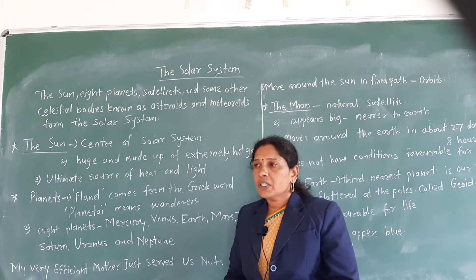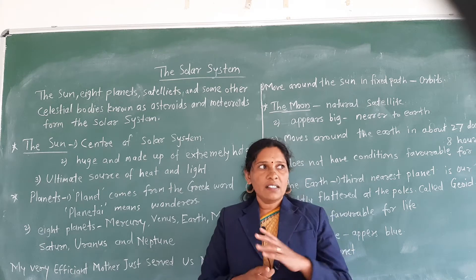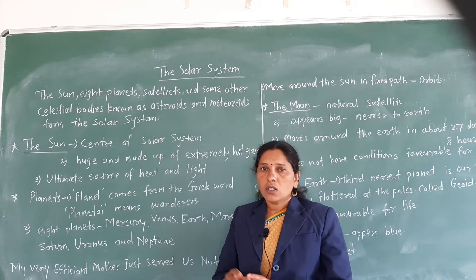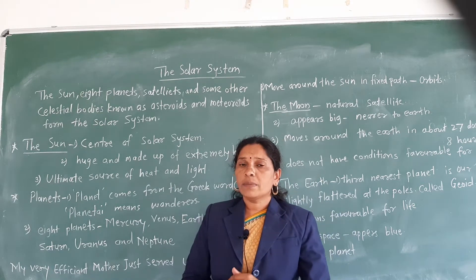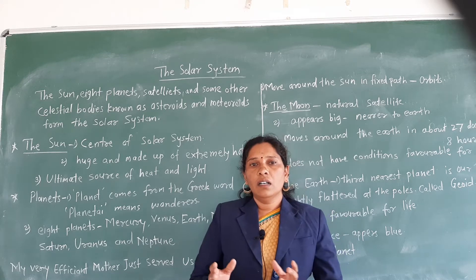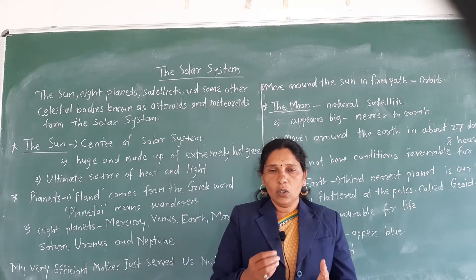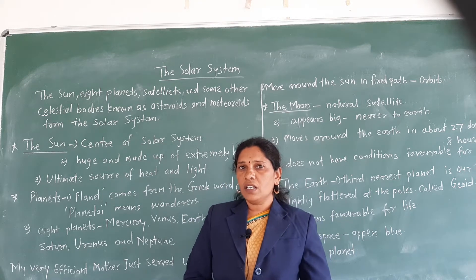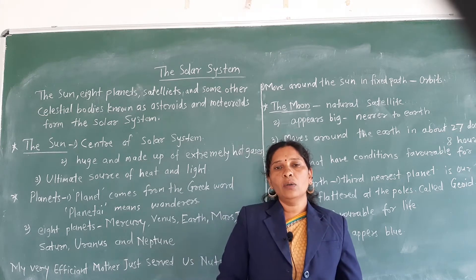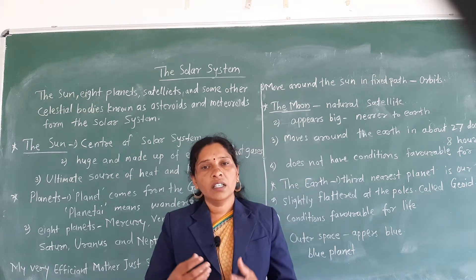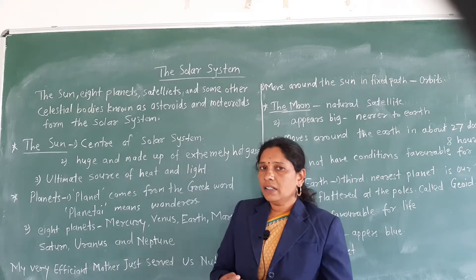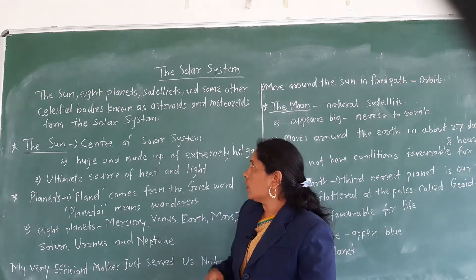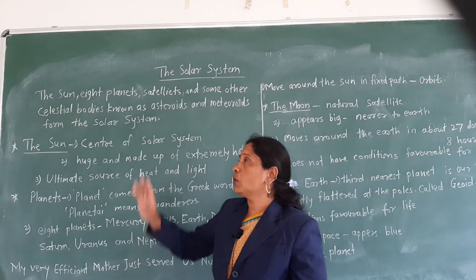We will learn about celestial bodies — what are celestial bodies? We can see many stars shining in the sky at night. Those are all celestial bodies. Some celestial bodies have their own heat and light — they are called stars. The sun is a star. Some celestial bodies do not have their own light and heat, so they get light and heat from the stars. Now we will learn about the solar system.